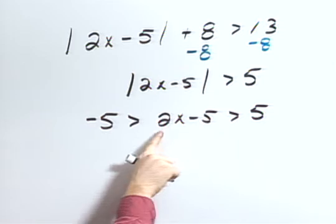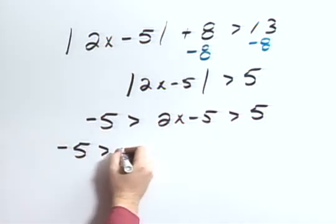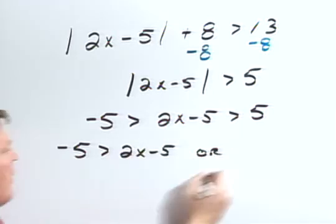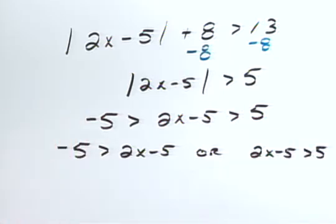Well, one number won't work, so I need to split this up so that it's actually negative 5 is greater than 2x minus 5 or 2x minus 5 is greater than 5.